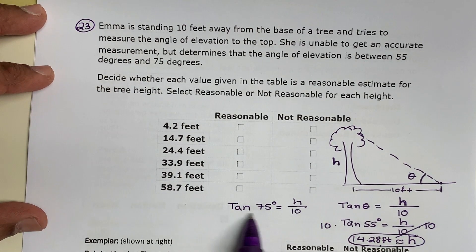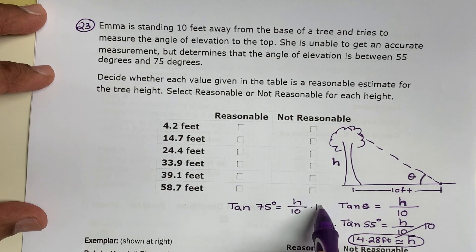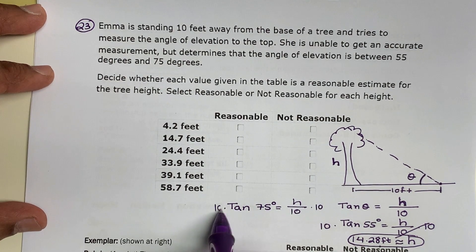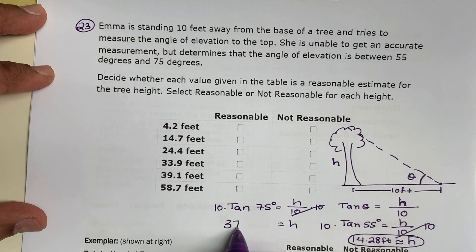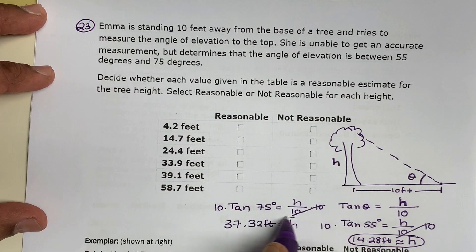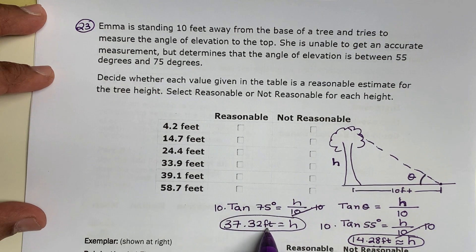Tangent 75 equals H over 10. Again, I'm going to multiply both sides by 10. If you plug this in your calculator, 10 times tangent 75, you will get approximately 37.32 feet. Here is the lower end of our answer and here is the upper end of our answer.